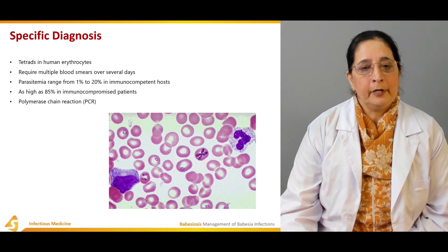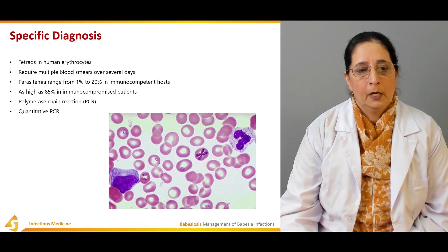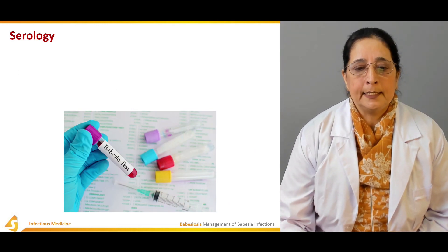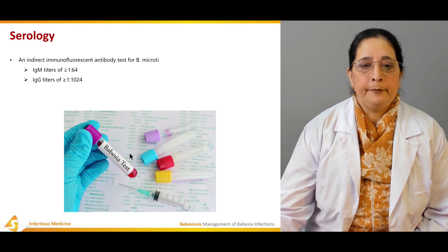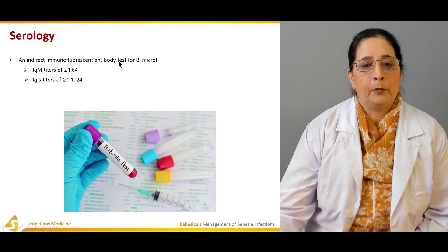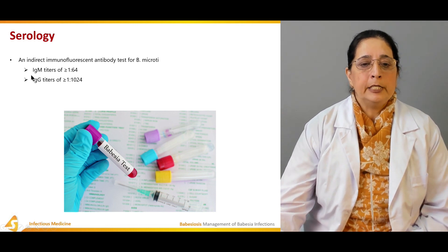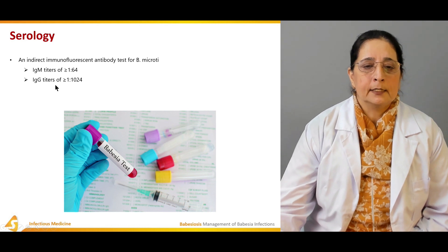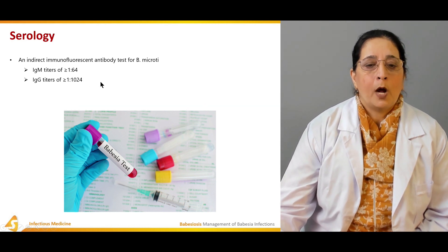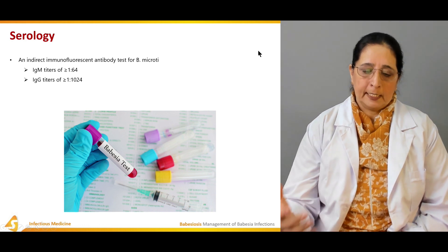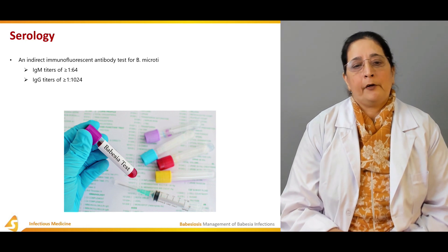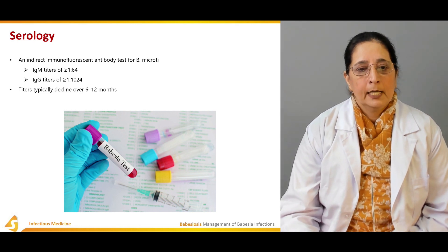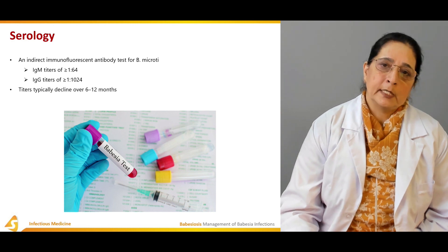Polymerase chain reaction (PCR), including quantitative PCR, can also be performed. Serology involves testing the serum using an indirect immunofluorescent antibody (IFA) test for Babesia microti, with IgM titers greater than 1:64 and IgG titers greater than 1:1024 being significant. Titers typically decline over 6 to 12 months.